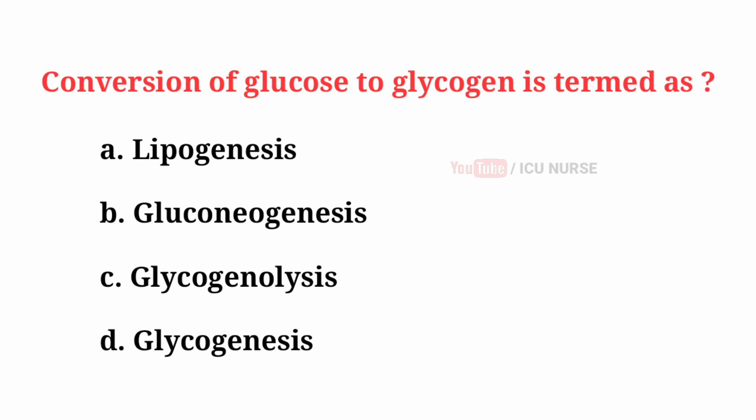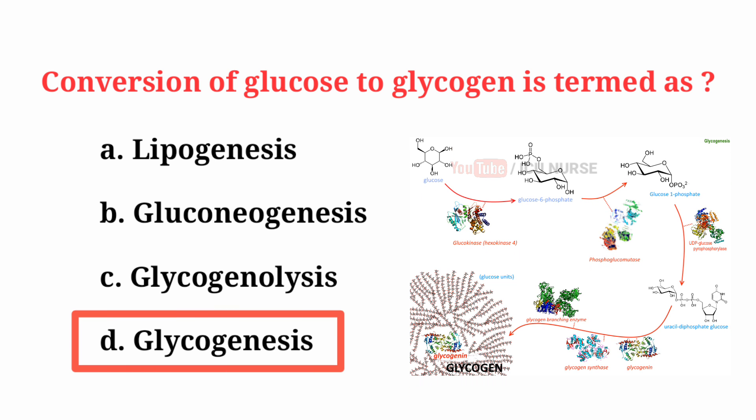Conversion of glucose to glycogen is termed as — the correct answer is D: Glycogenesis.